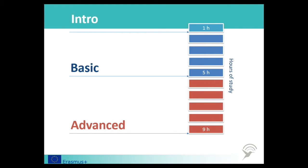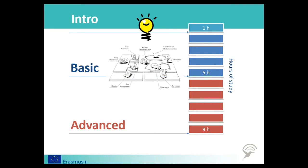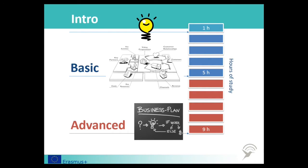The advanced level will take around nine hours and there you will see how your business model can translate into a business plan and how you can pitch your idea to a potential investor in order to attract funding. So we will start with your idea, explore the various implications of your idea through the Business Canvas, and then develop that into a business plan.